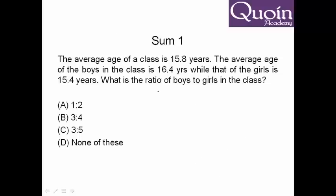So here we are basically mixing boys and girls. The average age of boys is 16.4 years. The average of girls is 15.4 years. And the average of class is 15.8 years. So we can do alligation. 16.4-15.8 is 0.6. 15.8-15.4 is 0.4. And the ratio comes to 2 is to 3. So in this case it will be none of these.